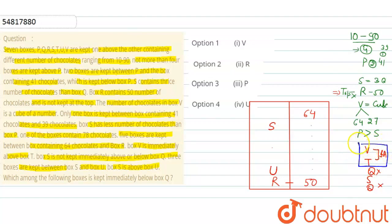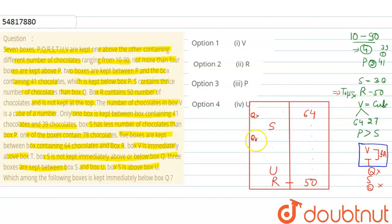Now considering the placement of V and T — since V is immediately above T, we need two consecutive positions for them. Q cannot be placed immediately next to S. With the condition that P has 2 boxes between it and the 41-chocolate box, we can determine P's position. Placing P, and using the S-U condition with 3 boxes between them, we determine all remaining positions. The 41 and 39 chocolate boxes have one box between them, which also checks out.